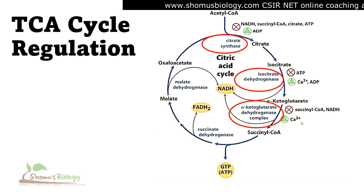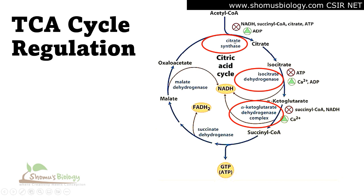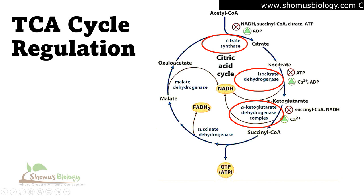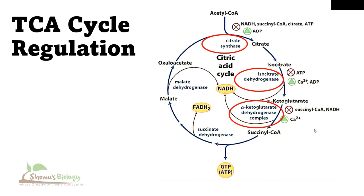These are the three stages of Krebs cycle or TCA cycle regulation. Notably, citrate synthase is the step without any redox reaction, whereas isocitrate dehydrogenase and the alpha-ketoglutarate dehydrogenase complex both involve redox reactions — oxidation-reduction reactions where NADH is being produced. These are therefore the key regulatory sites. That covers the regulation of the Krebs cycle.